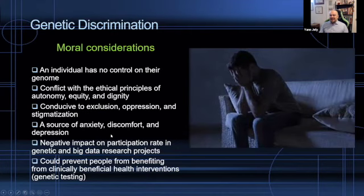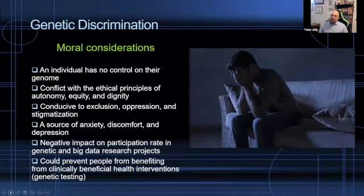Sometimes people — and this is really troublesome — will refuse genetic tests that are actually indicated for their healthcare because they have a family history of a certain disease. They will nonetheless not take the test because they're afraid that receiving a result showing a genetic predisposition will bar them from insurance, employment, or other services, and might even impact access for their children in the future.